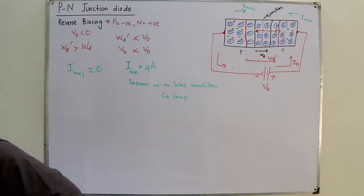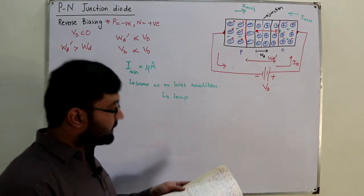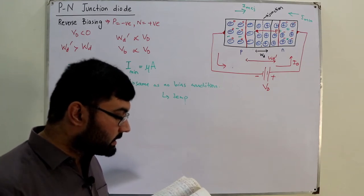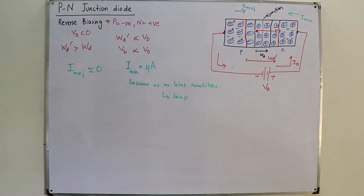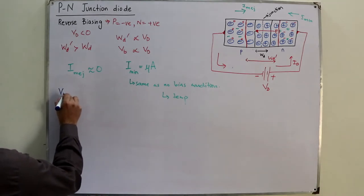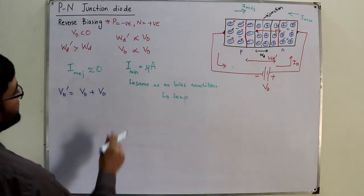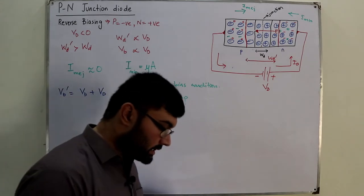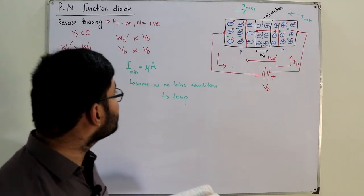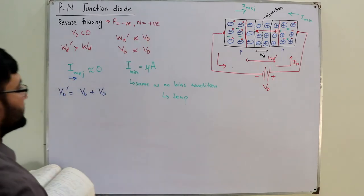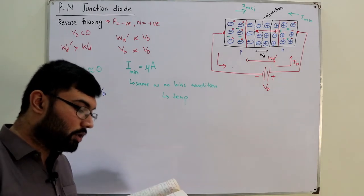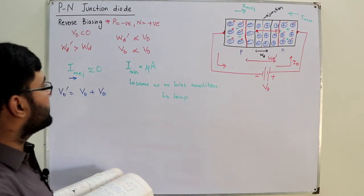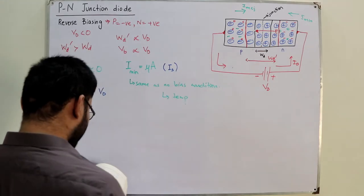Summary points: attraction between holes and the negative terminal, and electrons of the N side and the positive terminal, causes uncovering of immobile ions. The new barrier potential VB' equals the old barrier potential plus V_diode, so it increases. The majority charge carrier cannot overcome the increased barrier potential, so I_majority is approximately equal to zero. The number of minority charge carriers does not change, so the minority carrier flow remains the same as under no applied bias. Under reverse bias, the only current is the reverse saturation current IS, in the range of microamperes.